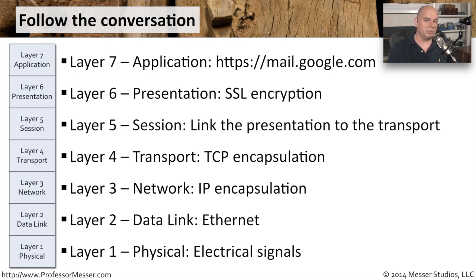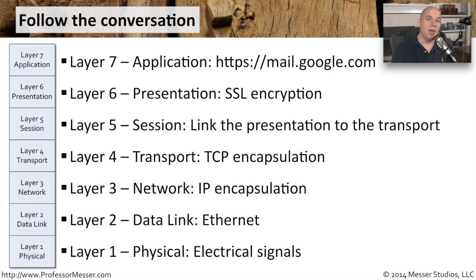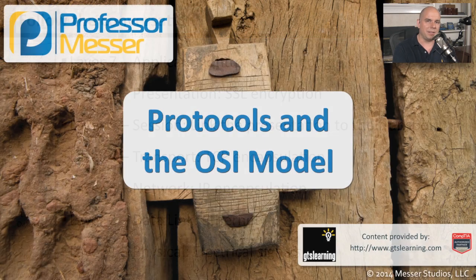Finally, once it got to the other side, it was able to be recreated on Google's server all the way back up to the application layer. So although we call this an OSI model, there are a lot of real-world connections to the way our applications work. This is how we'll communicate with other network professionals — when they ask where the problem is, you can speak specifically: I'm seeing an issue at layer 3 communicating to that IP address, or I'm seeing a layer 1 physical connectivity issue. All of these work together, and it's not too hard to map what's happening in the real world right back to the OSI model.